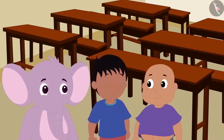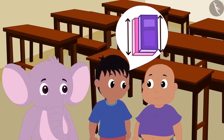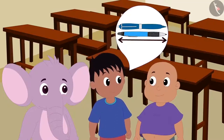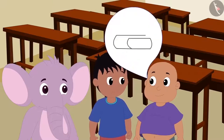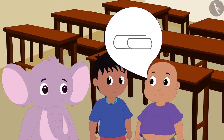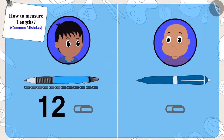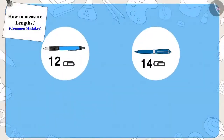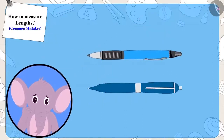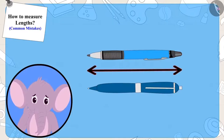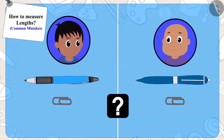Now Raju told Bablu that maybe their notebooks might be of the same length, but his pen is definitely longer than Bablu's. Bablu suggested they measure the length of the pen using a paper clip. Both of them took similar paper clips and measured their pens. Raju said his pen was 12 clips long and Bablu said his pen was 14 clips long. Appu again felt something was wrong — he placed both pens alongside each other and saw that both pens were of the same length.